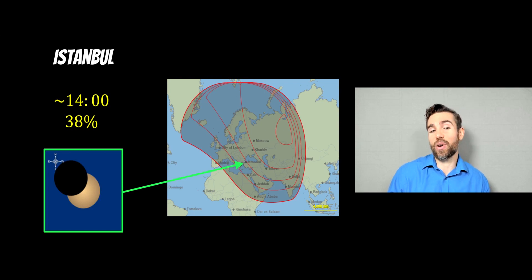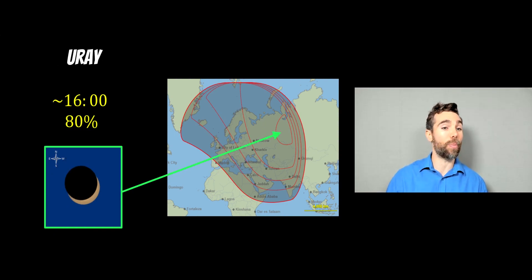Again, that's going to be the local time for that particular location. If you go a little bit further east again to where the best place is going to be, so places in Russia, you're going to get approximately 80 percent of the sun covered by the moon as it passes at its maximum.